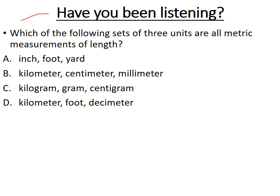Here's a practice question: which of the following sets of three units are all metric measurements of length? We're looking for metric length units. We can immediately cross out C because grams are not a measurement of length. Options A, B, and D all contain measurements of length, but A has inch, foot, and yard — those are not metric. D has kilometer and decimeter, which are metric, but also foot, which is not. That leaves B — all variations of the meter with different prefixes — all metric measurements of length, all related by factors of 10.